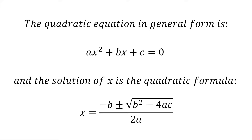Don't be fooled into thinking this equation is easy to solve. What makes this equation tricky to solve is the fact that x appears twice with different powers. Because of this, we need to eliminate one of these terms containing an x. The key to doing this is with a process called completing the square.